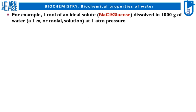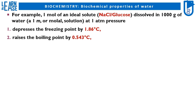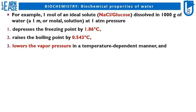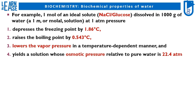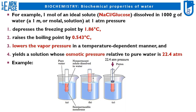For example, one mole of an ideal solute (NaCl/Glucose) dissolved in 1000 grams of water (a 1m, or molal, solution) at 1 atm pressure: depresses the freezing point by 1.86°C, raises the boiling point by 0.543°C, lowers the vapor pressure in a temperature-dependent manner, and yields a solution whose osmotic pressure relative to pure water is 22.4 atm. See the image of osmosis as an example.